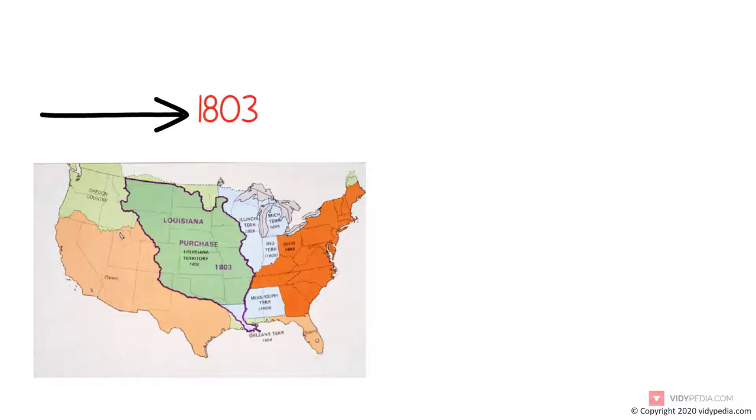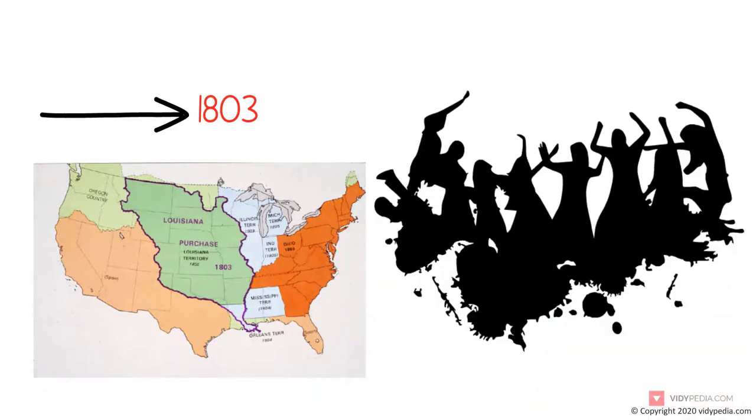To make room for settlement, Jefferson began a controversial Indian tribal removal process from the newly acquired territory. As a result of peace negotiations with France, his administration reduced military forces.